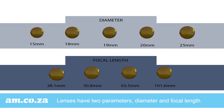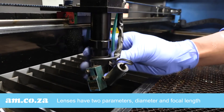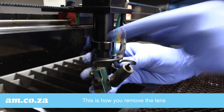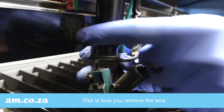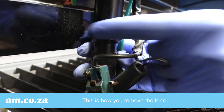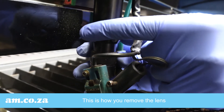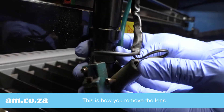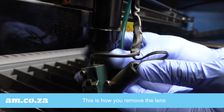Lenses have two parameters: diameter and focal length. Depending on the variations of your working project, you will need a range of choices in both diameter and focal length. To remove the lens, I will demonstrate on the TrueCut laser machine — other brands of machinery generally have similar structures.